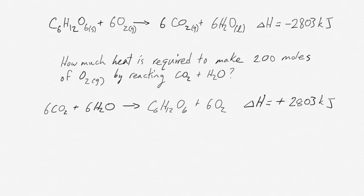So if we want two moles of oxygen to be produced and we want to find out how much heat that requires, we simply set up a stoichiometric relationship just like we would any other time. So we say we have two moles of O2 that we want to make.